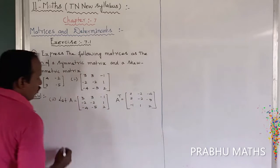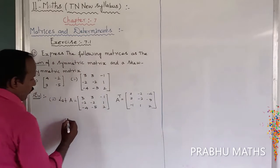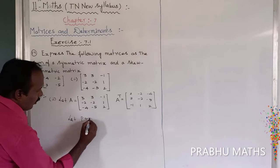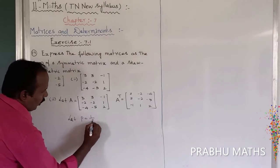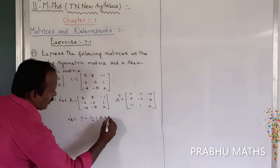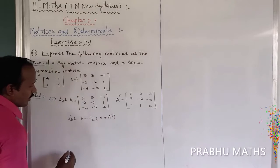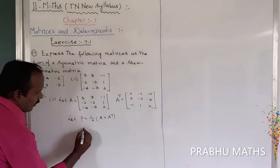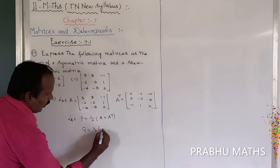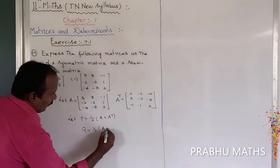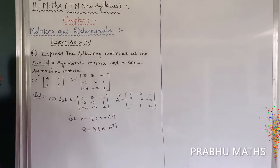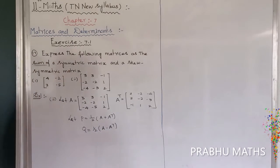To find the symmetric part, the condition is P equal to 1 by 2 into A plus A transpose. The second condition is Q equal to 1 by 2 into A minus A transpose. First, we find the value of P.